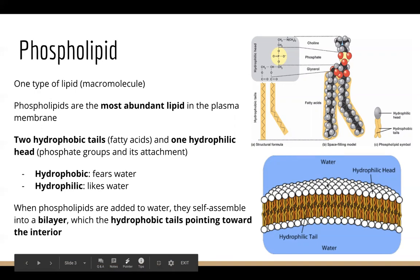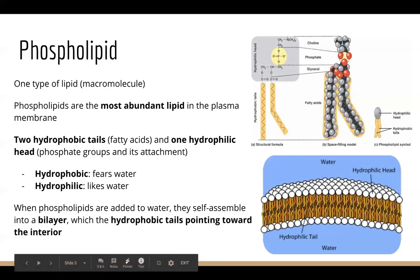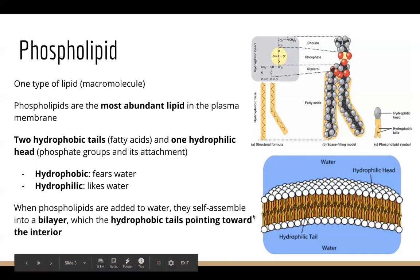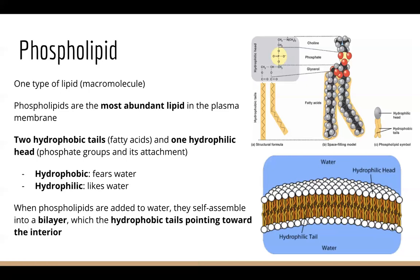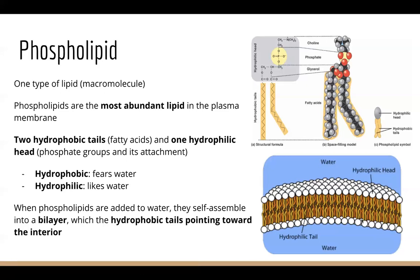The head is always what encounters water, and the tail is always inside, not encountering water, because it is folded inside. You can think of the two layers of heads as two pieces of bread in a sandwich, and the four tails as the fillings — the lettuce, ham, and cheese. The two pieces of bread will always be outside encountering water, and the hydrophobic tails will always be inside.